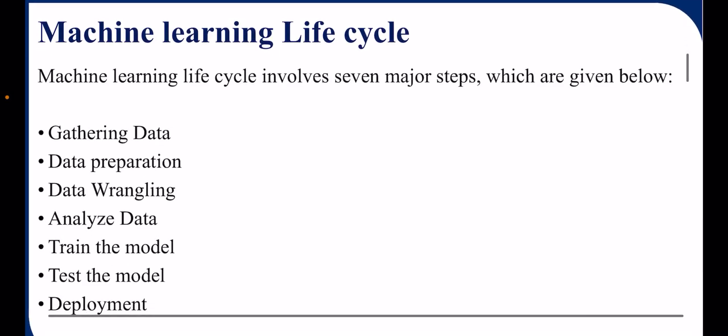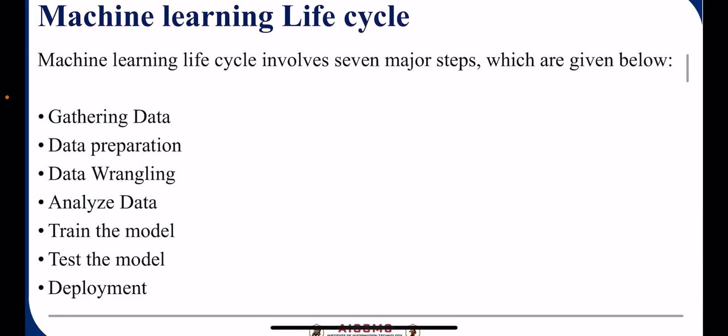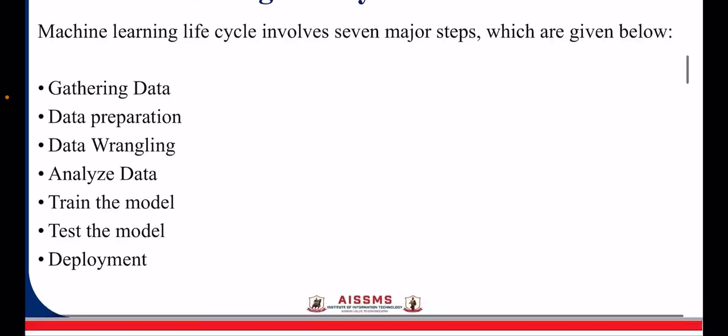So these are the 7 major steps: Gathering Data, Data Preparation, Data Wrangling, Analyze Data, Train the Model, Test the Model, and finally Deployment.